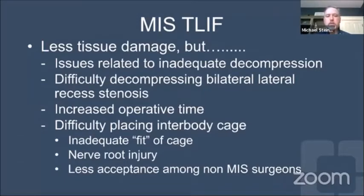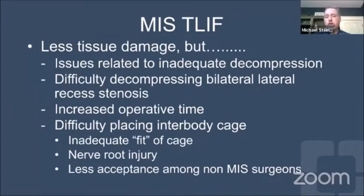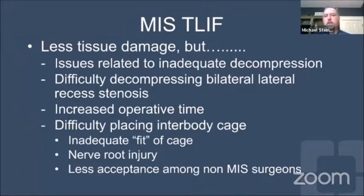It can result in increased operative time, especially early in one's experience compared to open surgery. There are also issues with cages working through a small tube — often inadequate fit, too small a cage that doesn't fit right, or too large a cage that can injure the nerve root. MIS T-LIF has also seen less acceptance among non-MIS surgeons who work from a standard open approach.